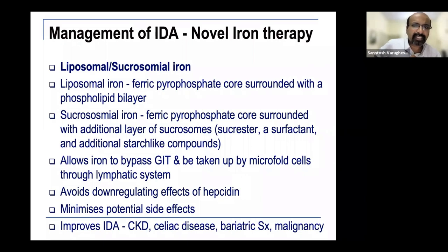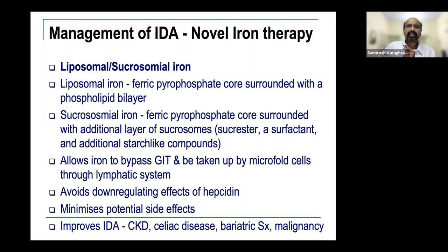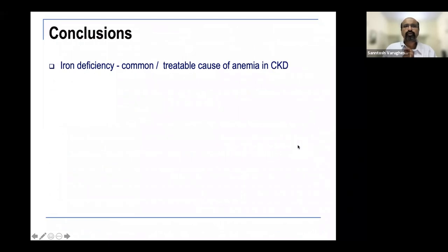Liposomal or sucrosomal iron is now becoming available — a ferric pyrophosphate core surrounded by either a phospholipid layer or sucrosome layer. The advantage is that the GI tract is bypassed, so GI side effects are less, and the downregulating effect of hepcidin on gut iron absorption is also circumvented. Studies show the rise in hemoglobin is similar to iron sucrose. The main drawback is cost. Liposomal iron improves iron deficiency anemia not only in CKD but in many other conditions.